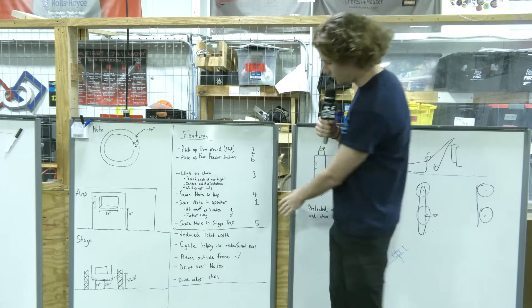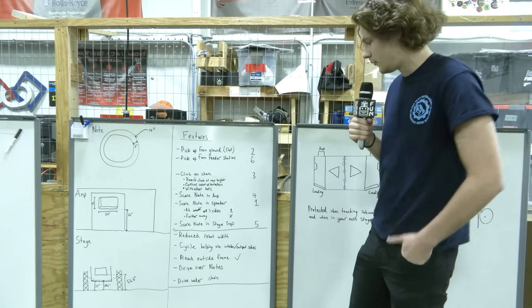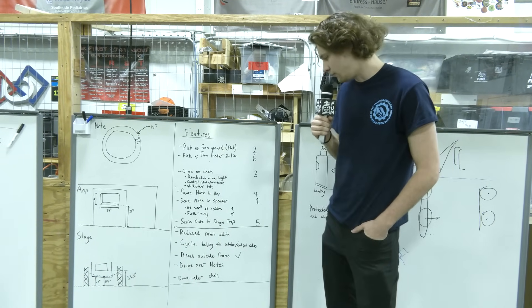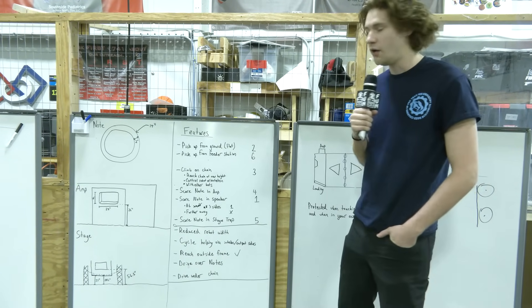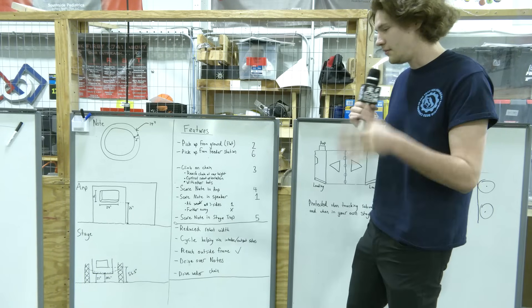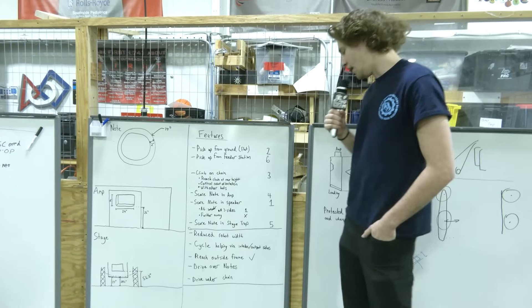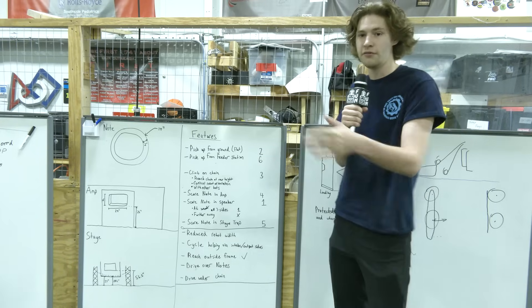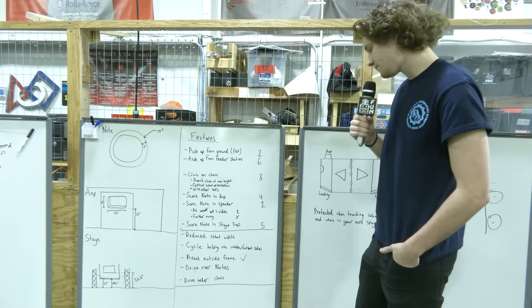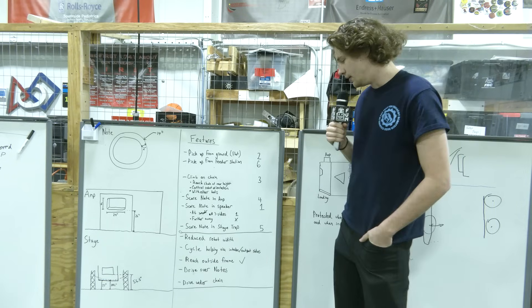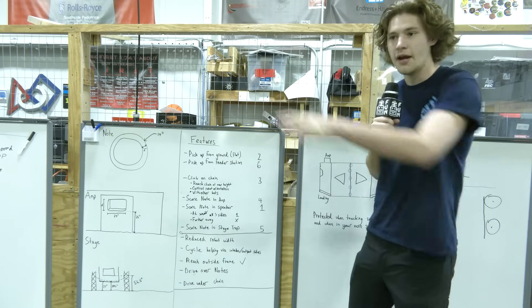And right here we have some little notes that we didn't really fully go through, but we talked about some notes about the robot that we wanted to include, which is reduced robot width, which will help a lot with having teammates next to each other on the chain. Cycle helping via intake and output side. So this is basically when you intake from one side and outtake on the other side.